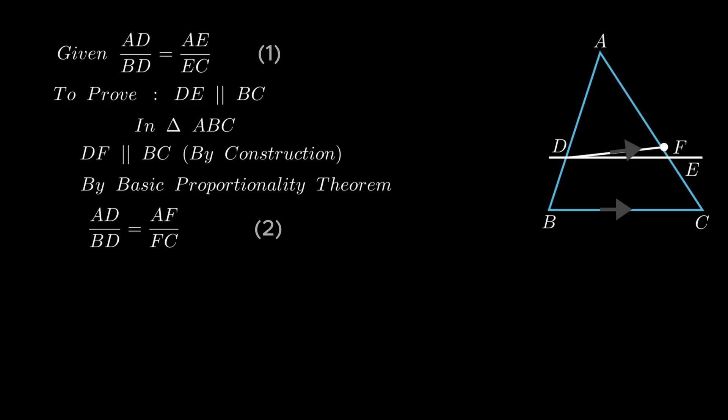By using the axiom that things equal to the same thing are equal to one another, from equations 1 and 2 we get ratio of segment AE to segment EC equals ratio of segment AF to segment FC.